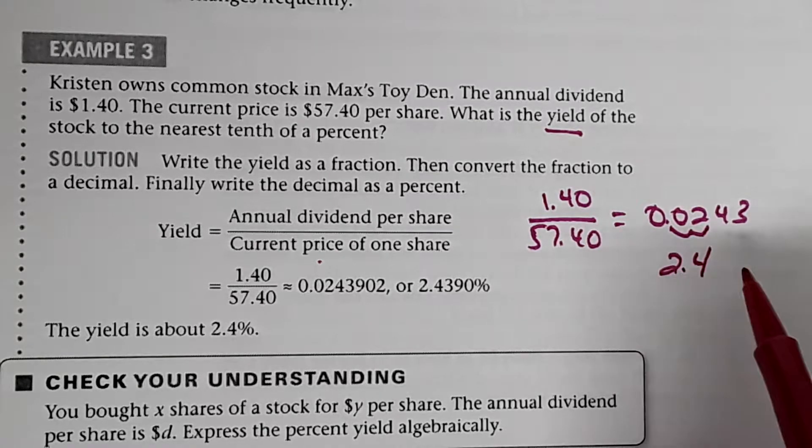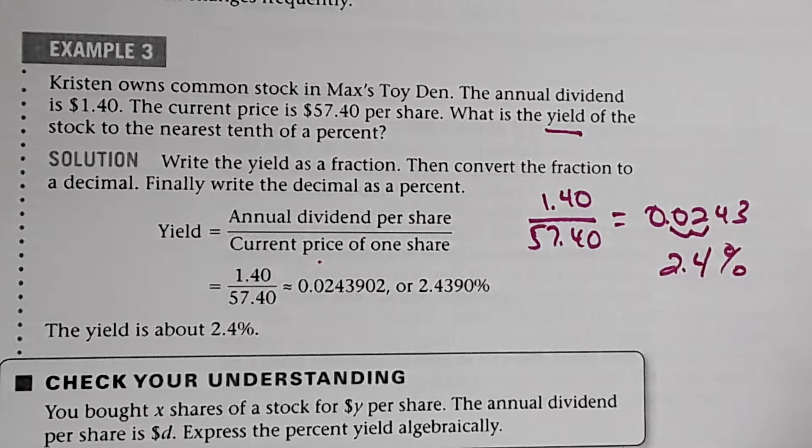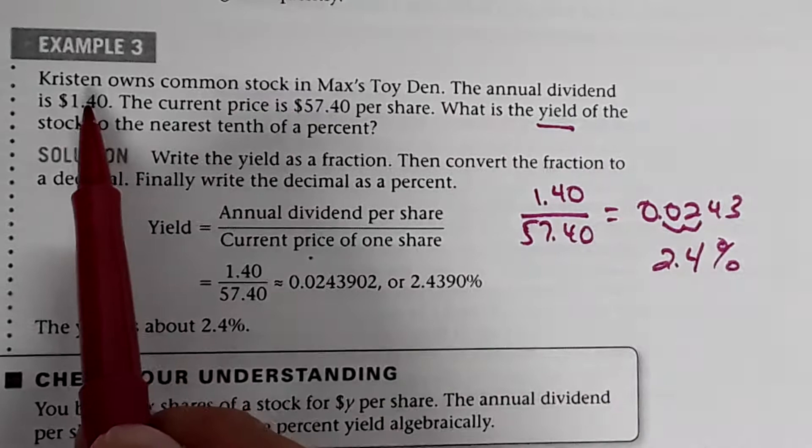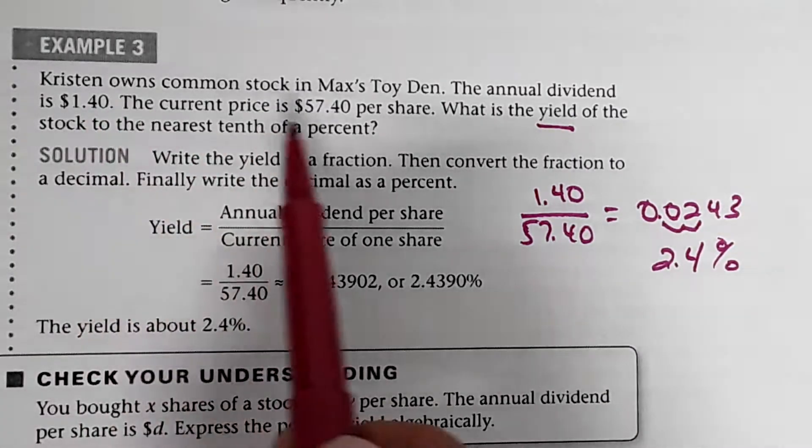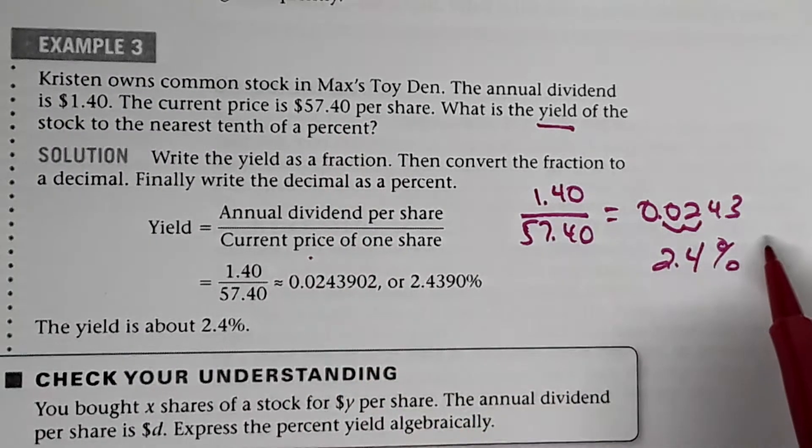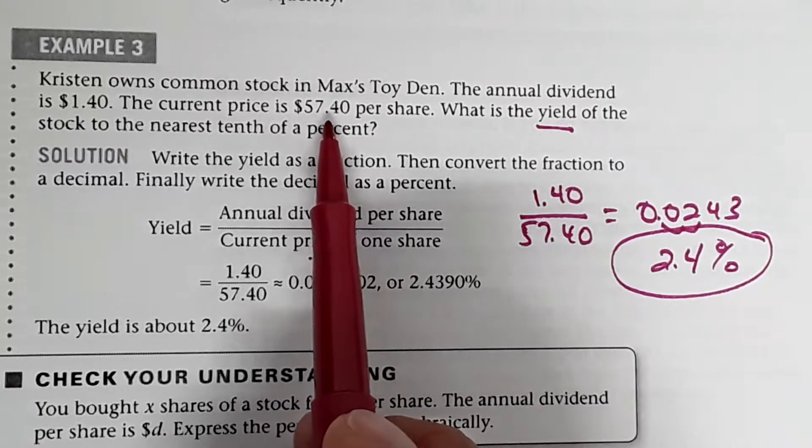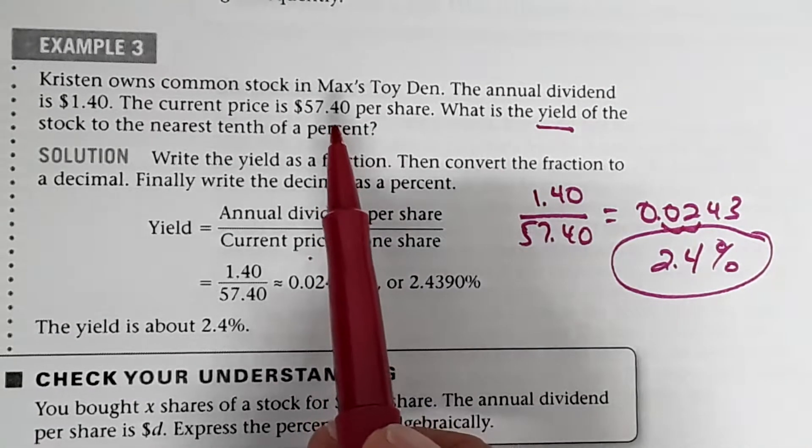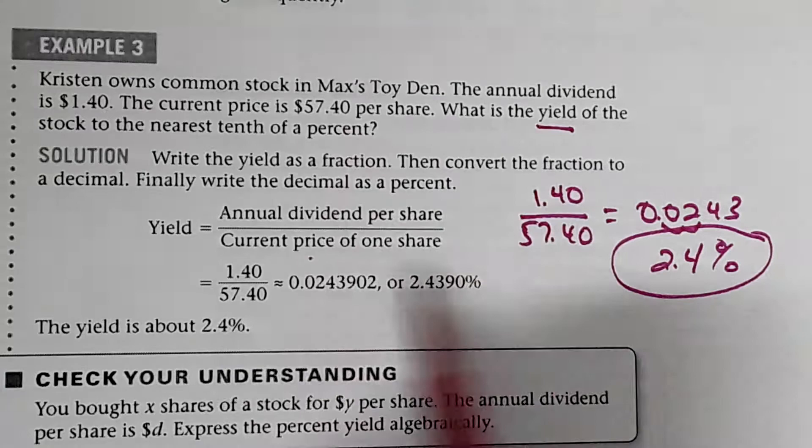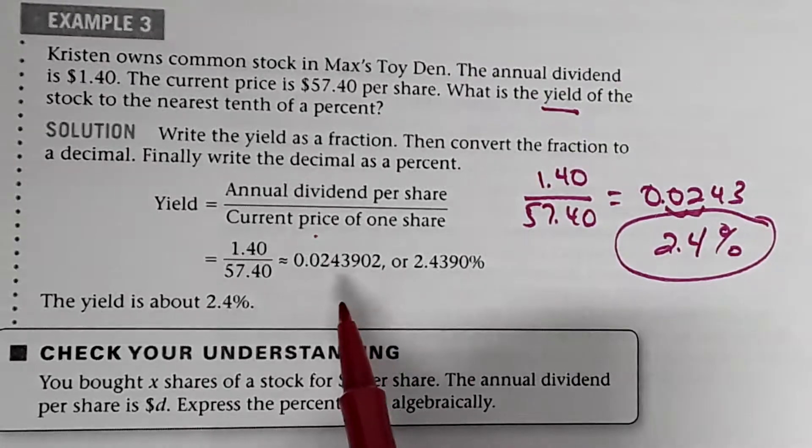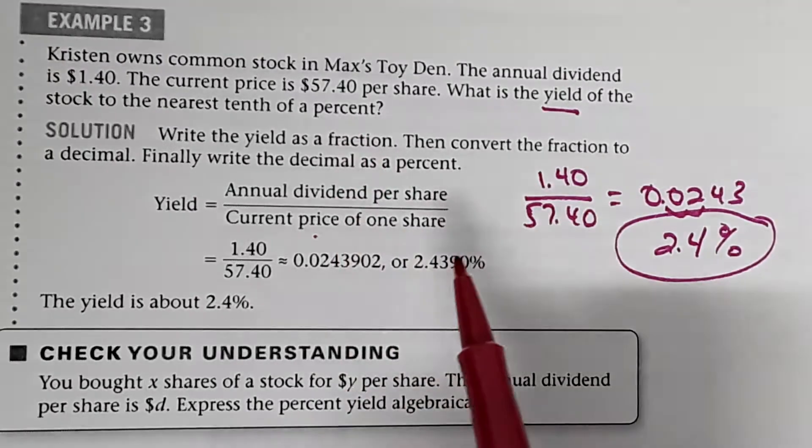Now you can see that this might not change very often, but this changes constantly, which means that this number is going to change constantly. So as this current price per share goes up or down, and that goes up or down constantly every day, then the yield will change. And it might just be a slight change, but it will change as the price per share changes.